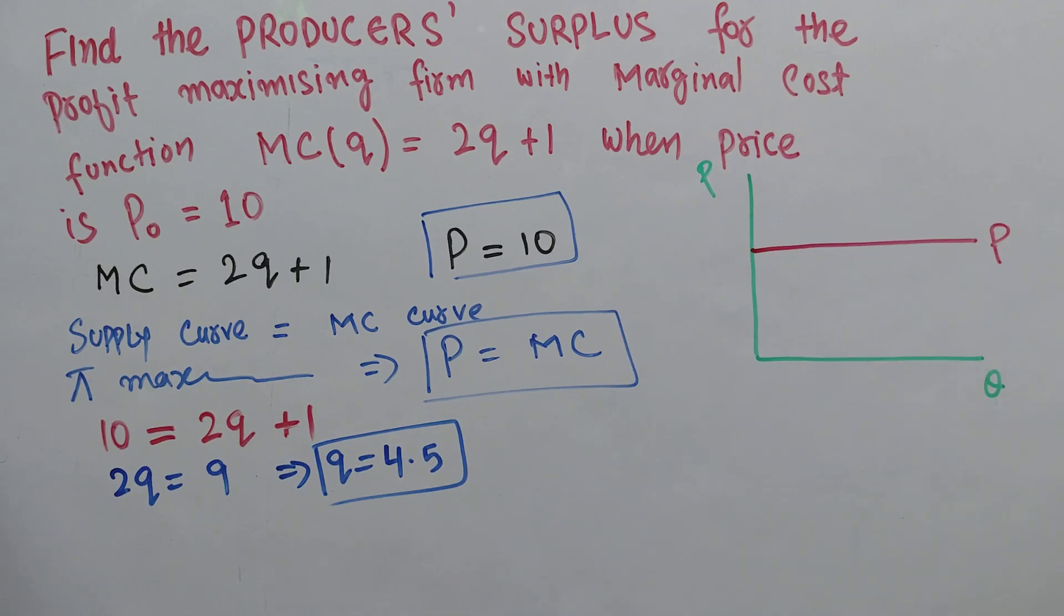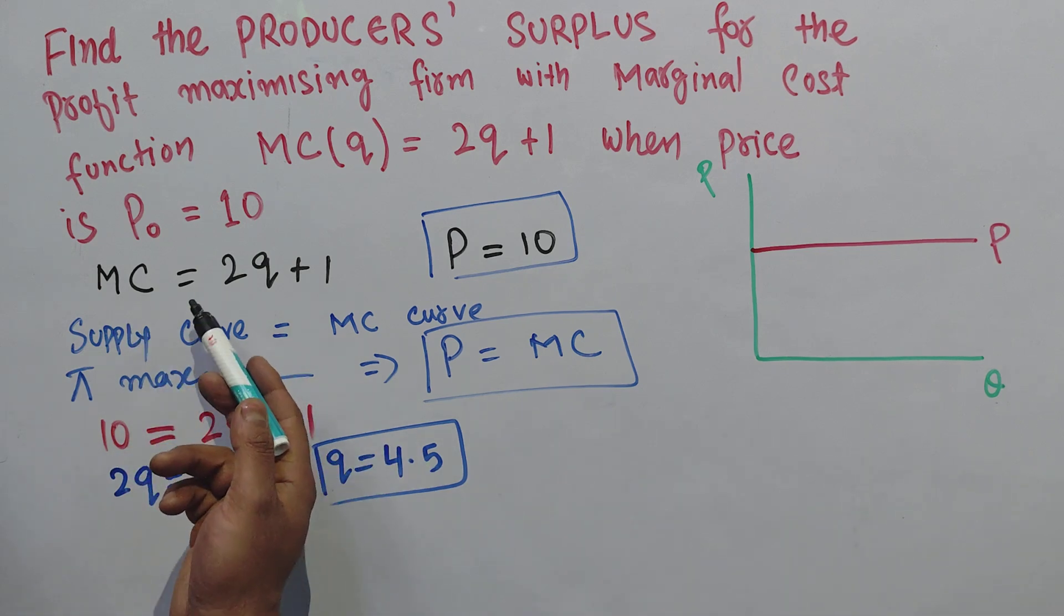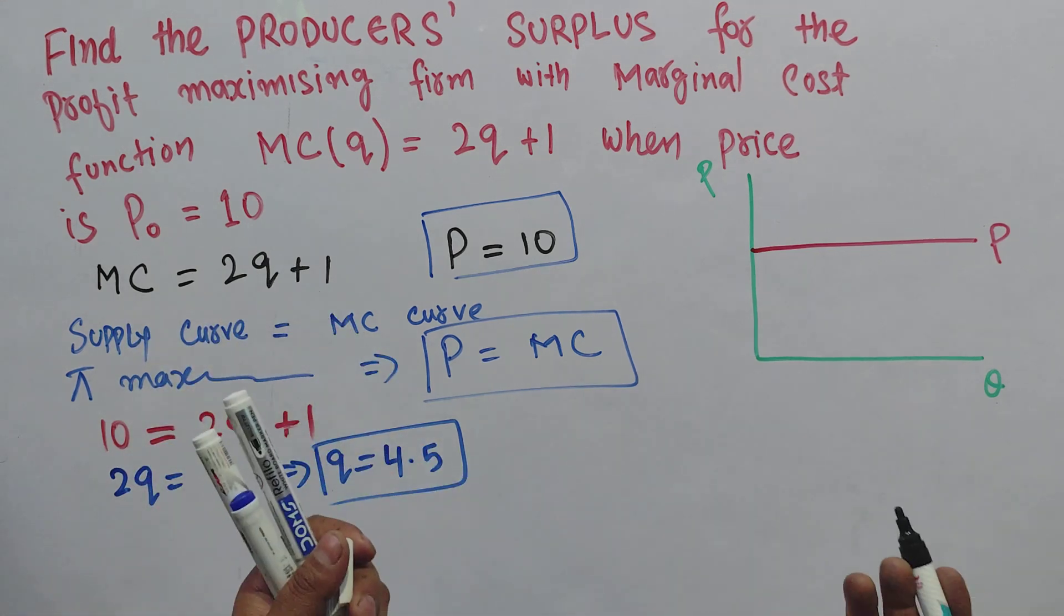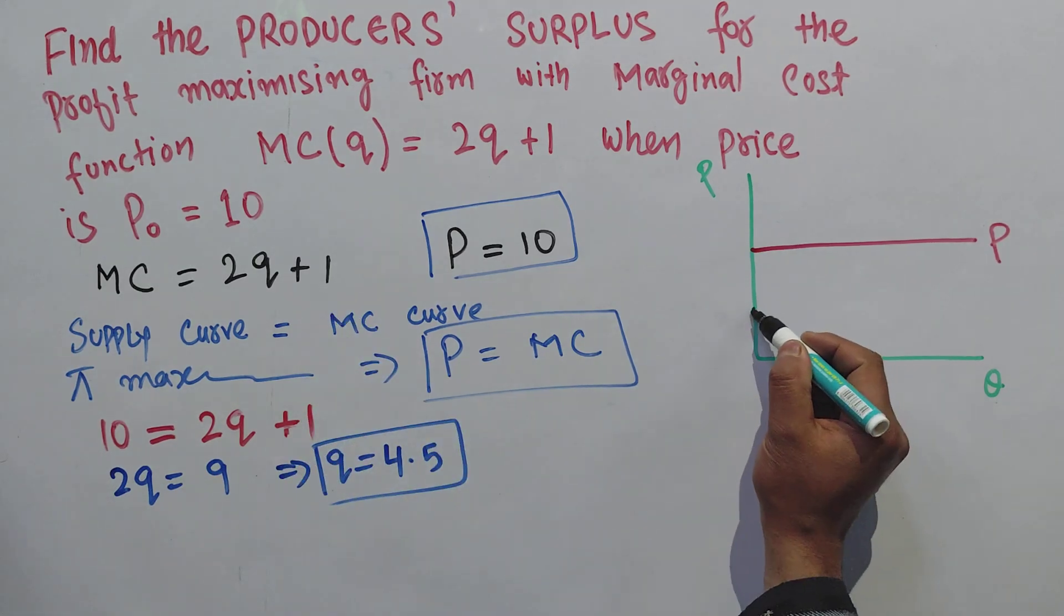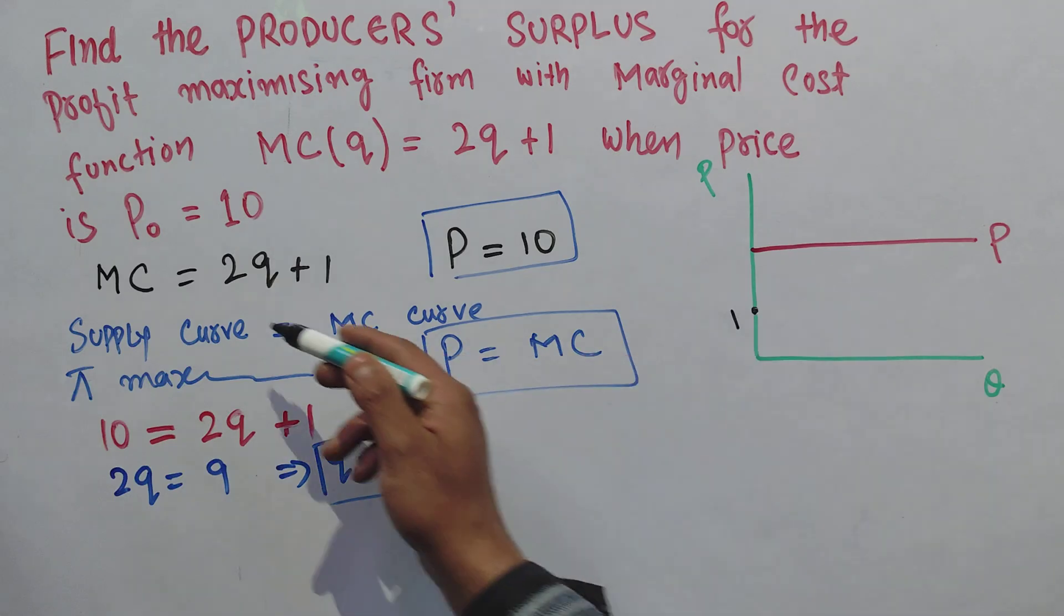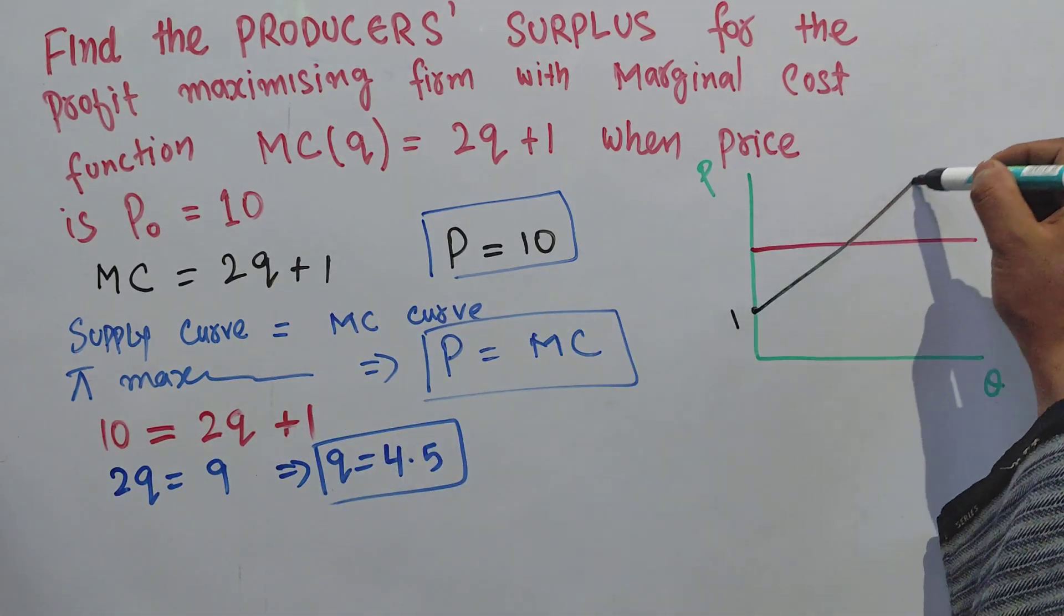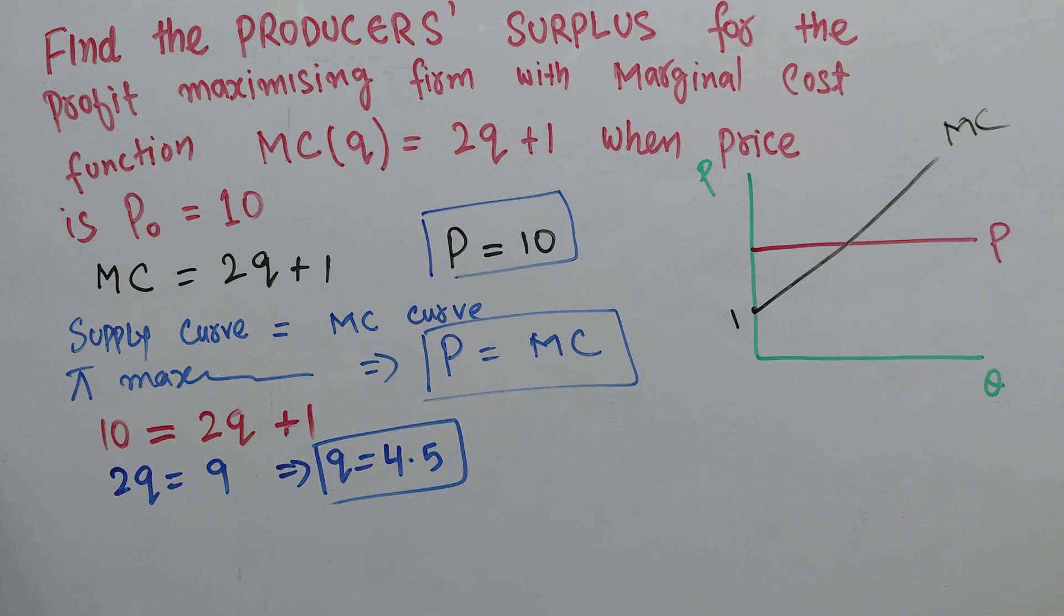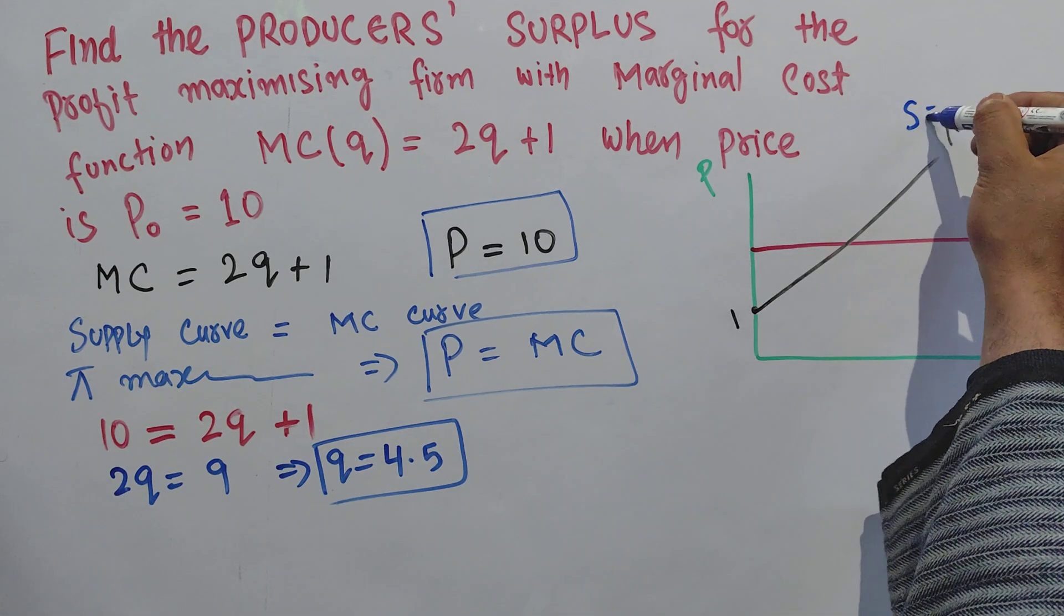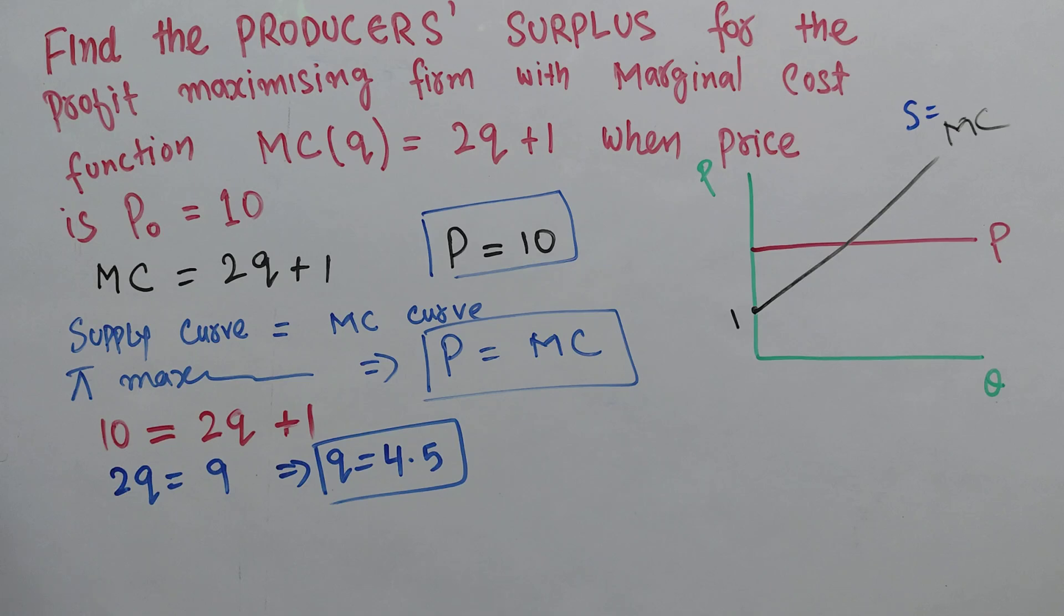We also have the marginal cost function MC = 2Q + 1, which is actually the supply curve of the firm. The intercept is 1 here and it is upward sloping, so this is the marginal cost function which is actually our supply function also.